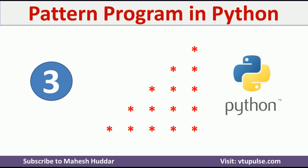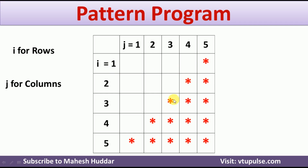Before we draw any pattern, whether in Python or any other programming language, we first need to understand the logic to draw that particular pattern. I will represent this pattern in the form of rows and columns. There are five rows and five columns. I will take one loop to iterate over the rows and one loop to iterate over the columns.